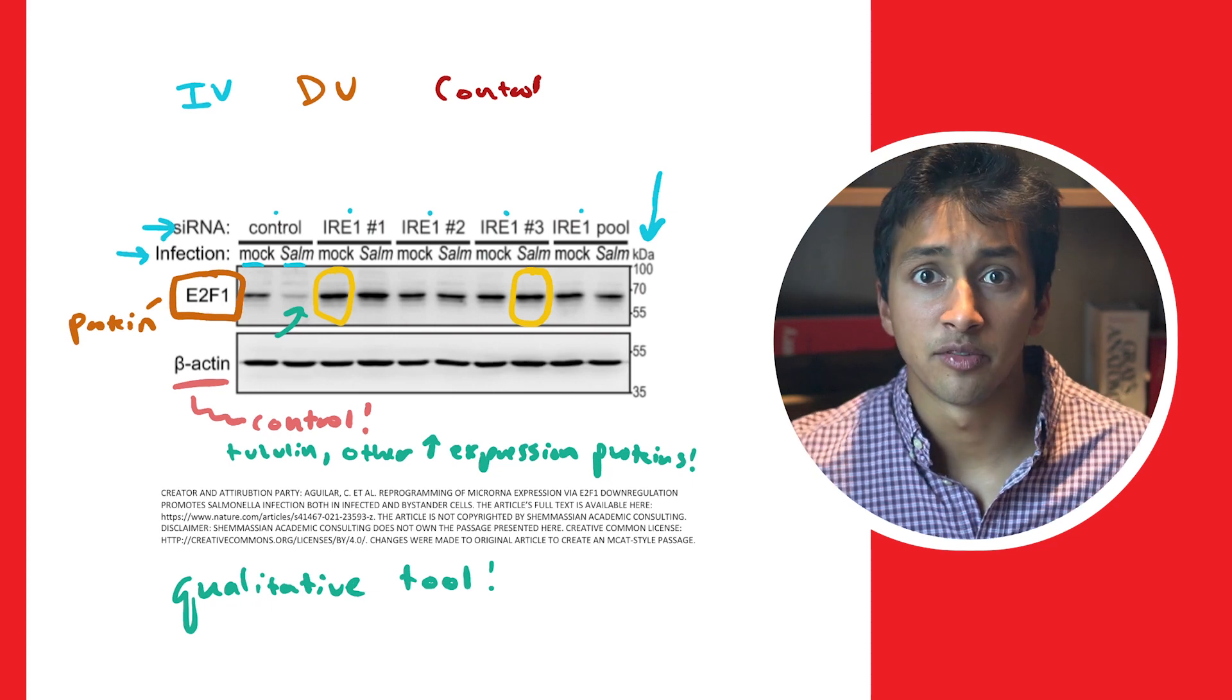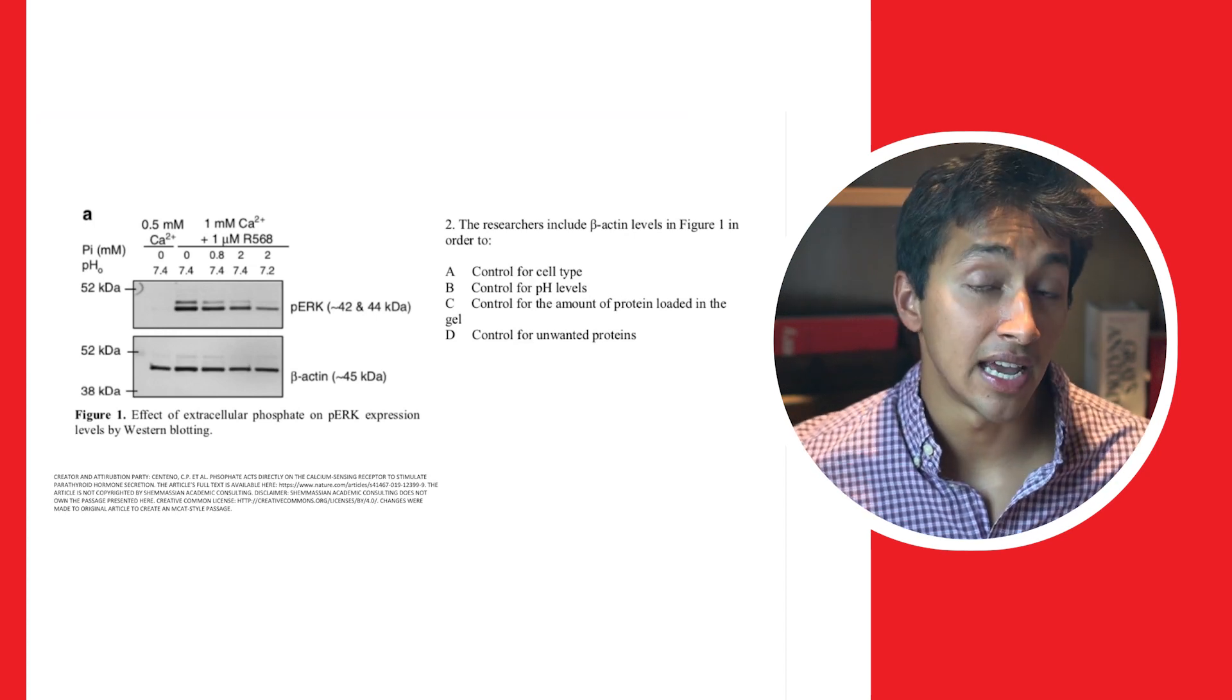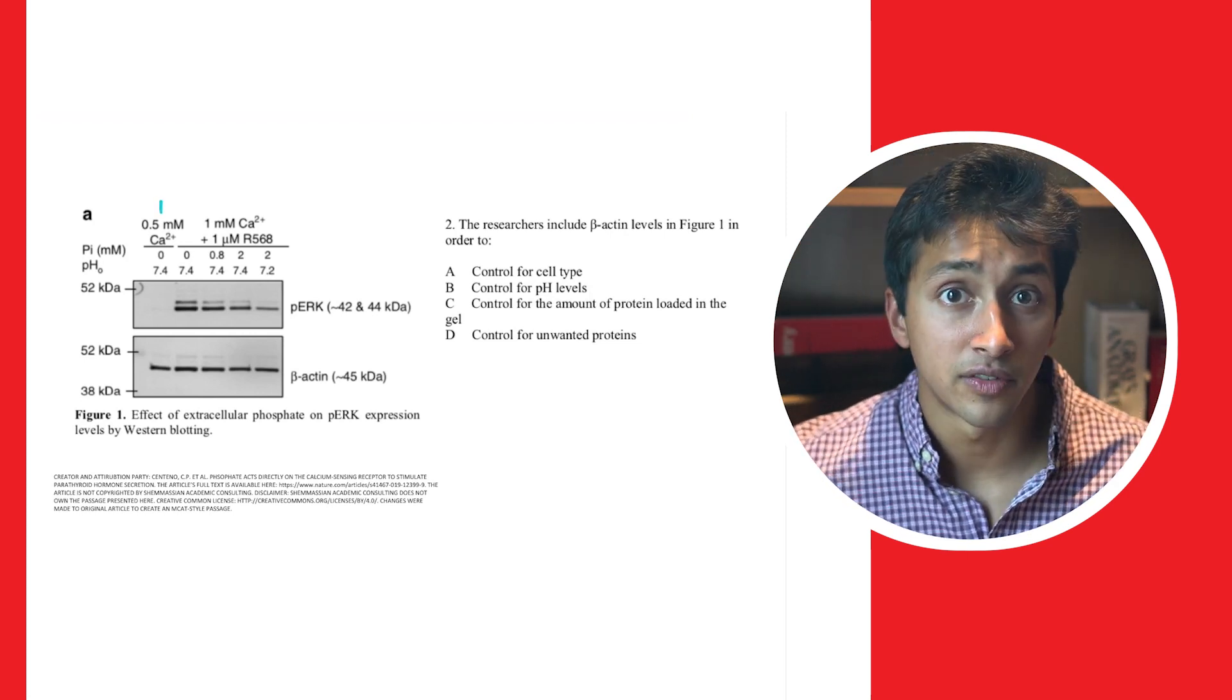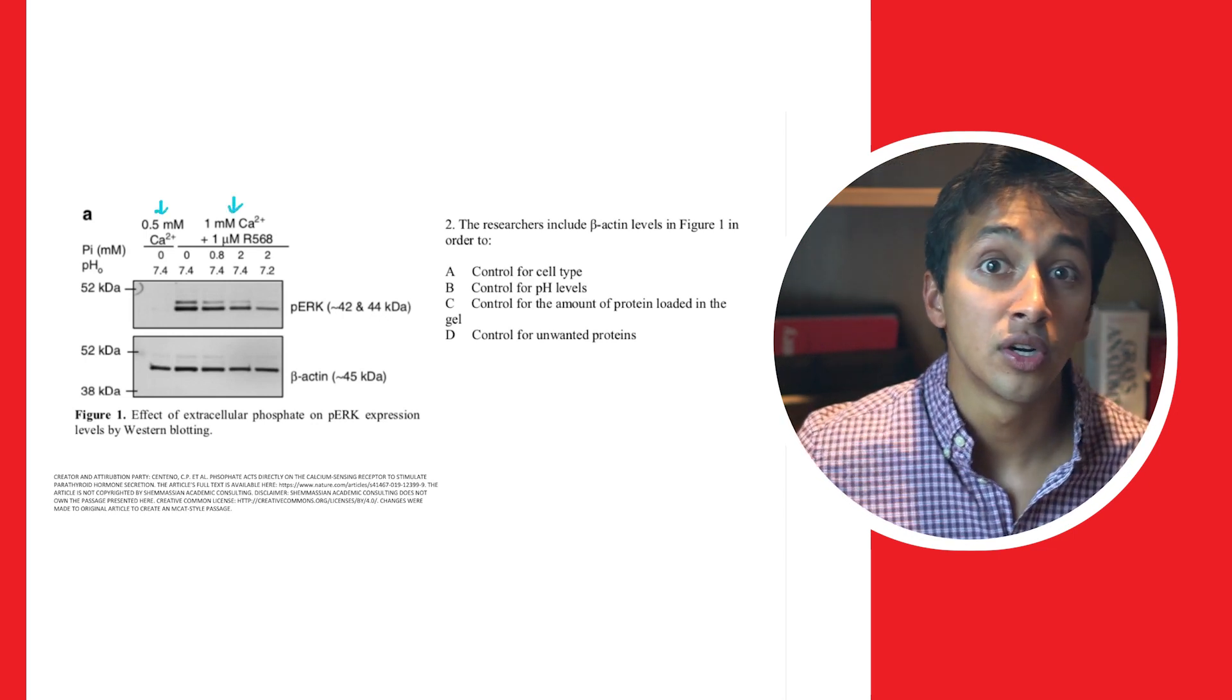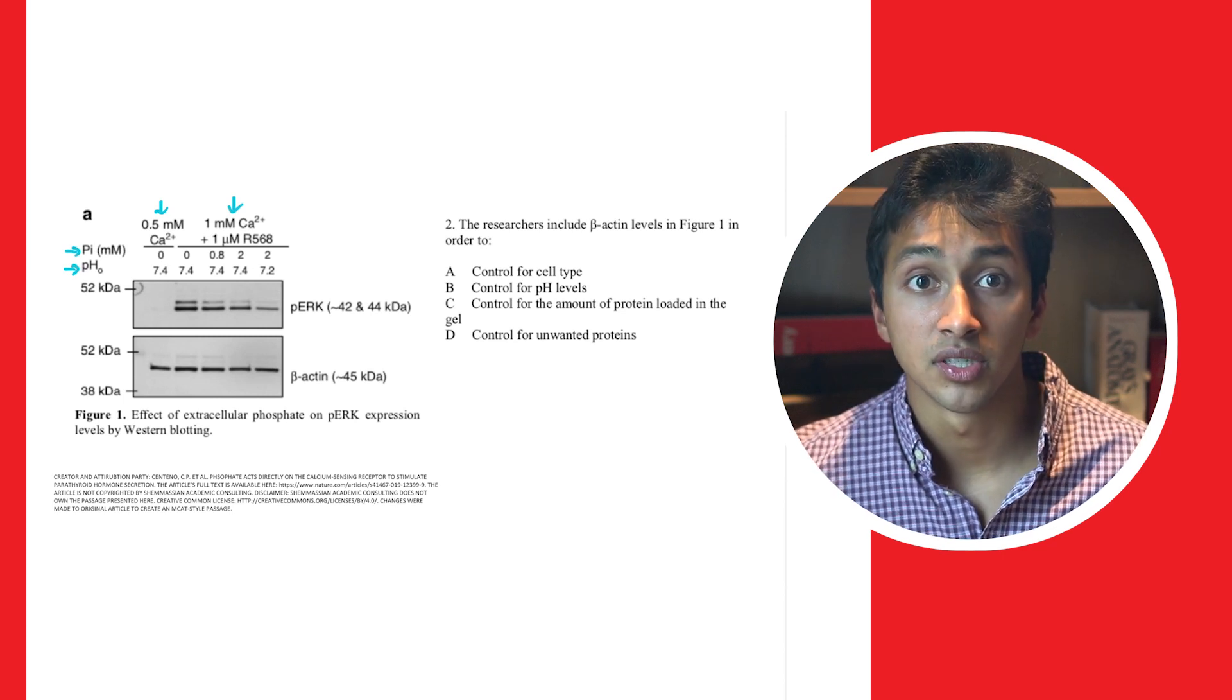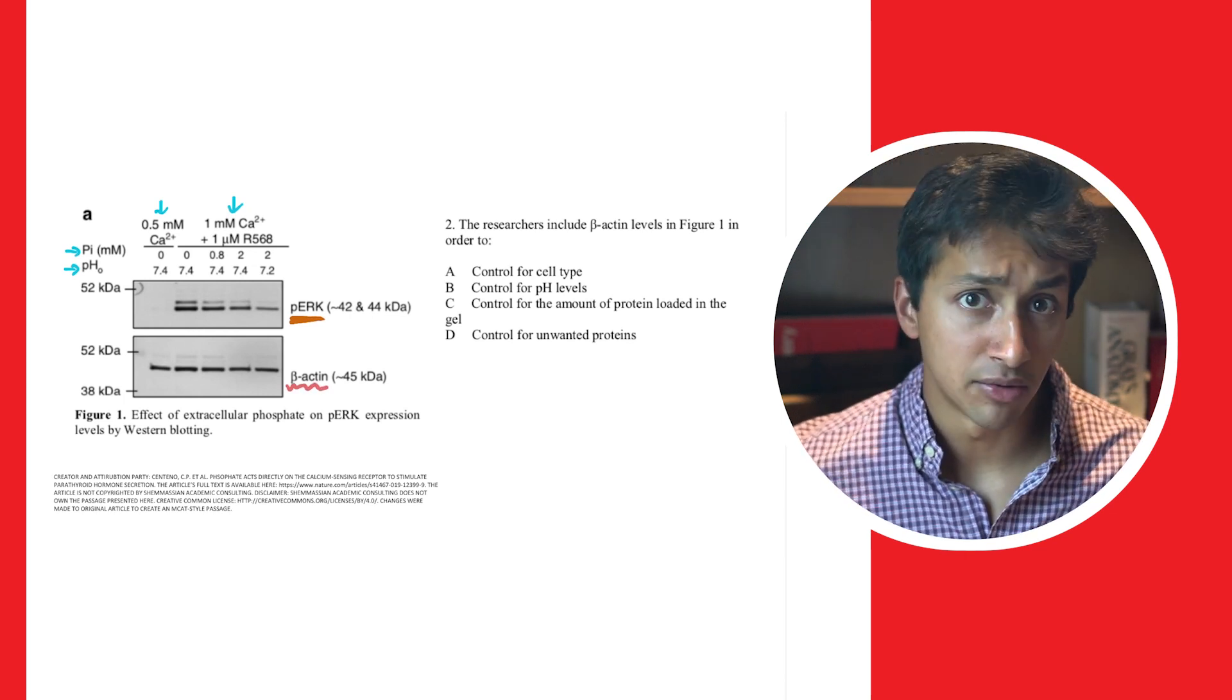Now that you have a good grasp of Western blot anatomy, let's look at a couple questions you might see on the MCAT. Before looking at the question, let's take a couple of seconds to analyze what's going on in this Western blot. Starting at the top, there are a few different independent variables. For example, either 0.5 millimolar of calcium alone, or 1 millimolar of calcium was used with 1 micromolar of the R568 compound. PI, expressed in millimolar, and the pH are also independent variables. The dependent variable is protein expression levels of phosphorylated ERK, and the control is beta-actin. That was pretty easy, right?